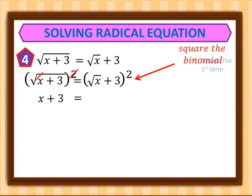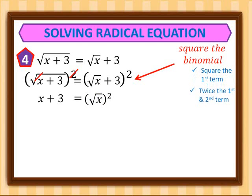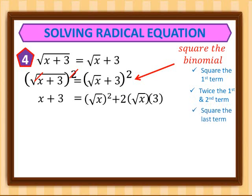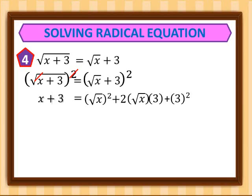Using the grade 8 binomial squaring rule: first, square the first term — square root of x squared gives us x. Second, twice the first and second term: 2 times square root of x times 3 gives 6 square root of x. Third, square the last term: 3 squared equals 9. So the right side becomes x plus 6 square root of x plus 9.